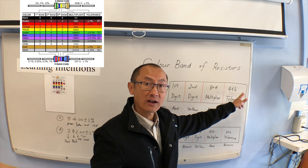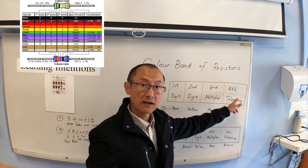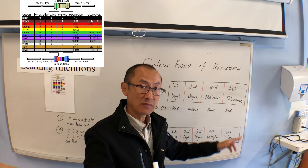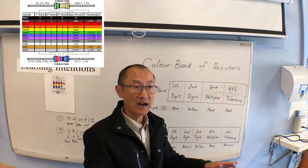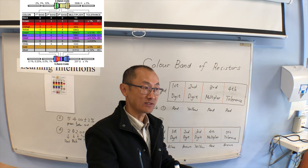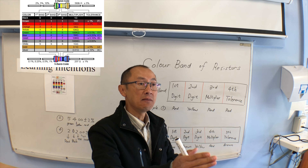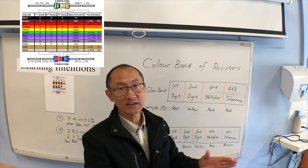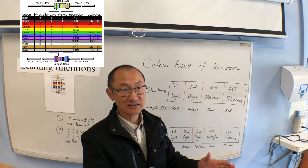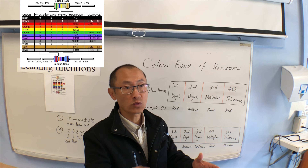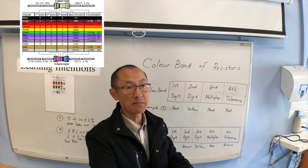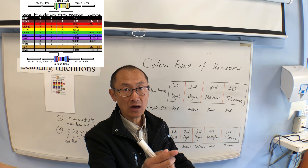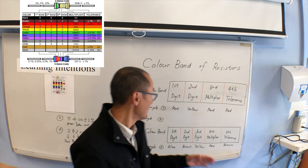The fourth color is the tolerance, that means plus or minus. For example, one percent tolerance means plus one percent or maybe minus one percent — a little bit bigger or a little bit smaller.